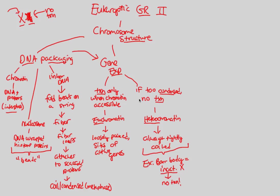Now that we've established the idea of what chromosome structure entails, specifically looking at DNA packaging and how that directly relates to how genes will be expressed, whether or not they're accessible or inaccessible in that euchromatin or heterochromatin state, we can apply this knowledge by looking at some direct examples of chromosomal structural modifications that tie back to gene regulation. The major one that your notes focus on is called histone modifications.